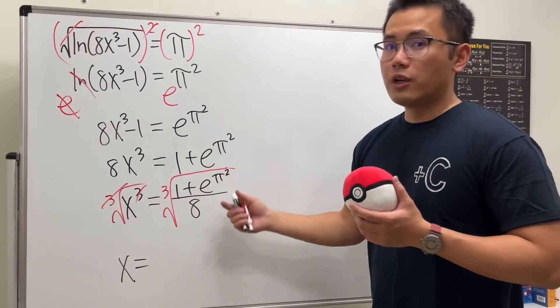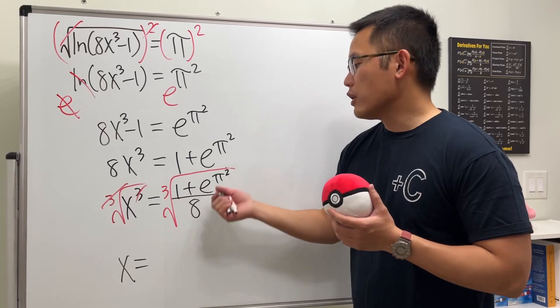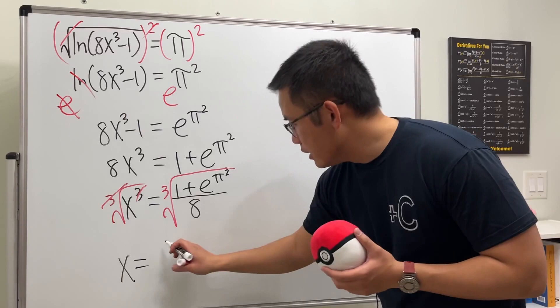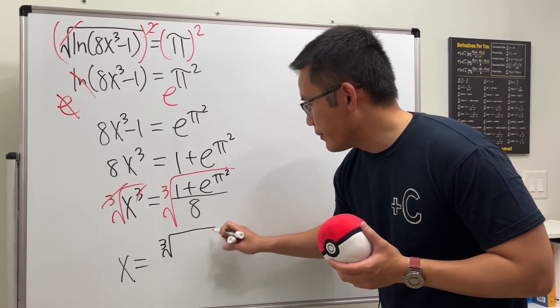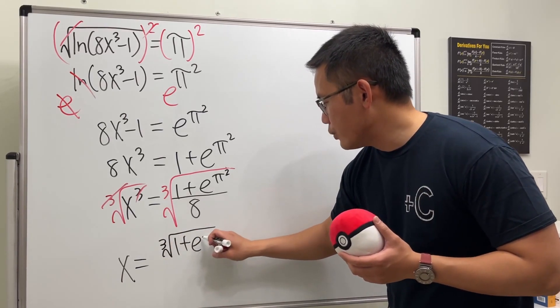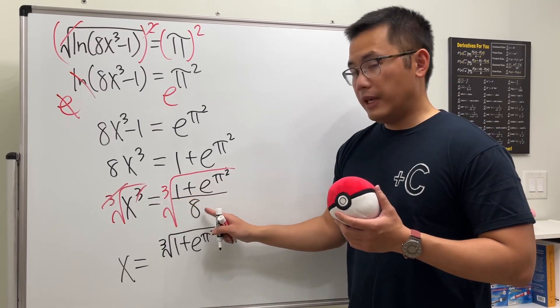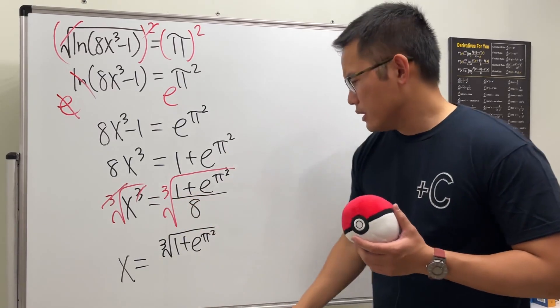When we take the cube root of a fraction, we can take the cube root of the top, so I will do that. But there's nothing we can really do; I'll just leave it as it is. So we will have the cube root of 1 plus e to the π squared, and then we can do the cube root of 8, which is just 2. So this is all divided by 2.